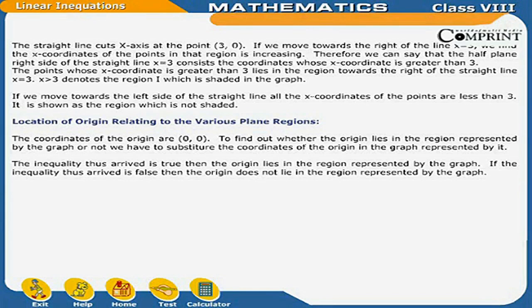Location of origin relative to the various plane regions: The coordinates of the origin are (0, 0). To find out whether the origin lies in the region represented by the graph, we substitute the coordinates of the origin into the inequality. If the inequality is true, the origin lies in the region; if false, the origin does not lie in the region.